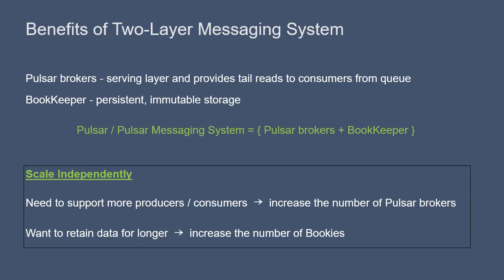To think more generally, if you need to support more producers and consumers, then the number of brokers can be increased. When new brokers are added, the topic partitions are redistributed across all of the brokers by adding ownership of some topic partitions to the new brokers. On the other hand, if the amount of storage needs to be increased, then you'll want to increase the number of bookies. Messages will automatically ramp up on the new bookies, and no rebalancing is required.